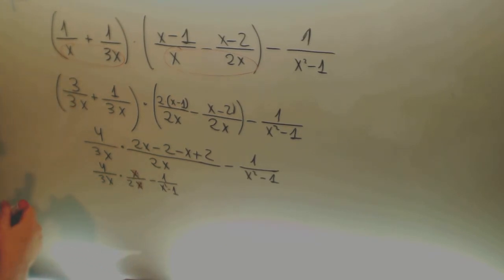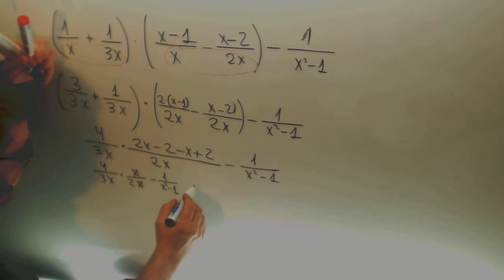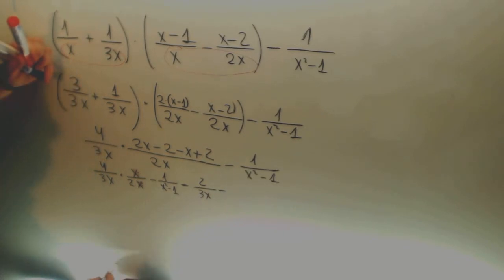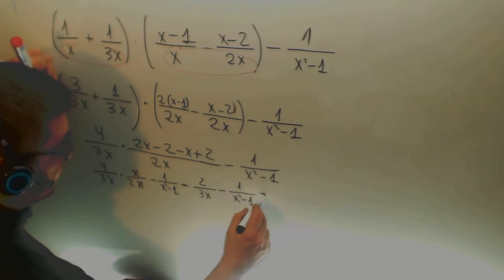Here you can simplify the x with the x. And the 4 with the 2. It is 2 divided by 3x minus 1 divided by x squared minus 1.